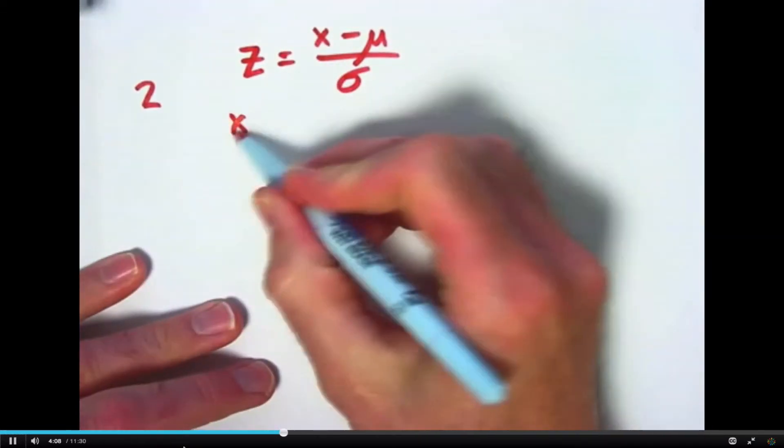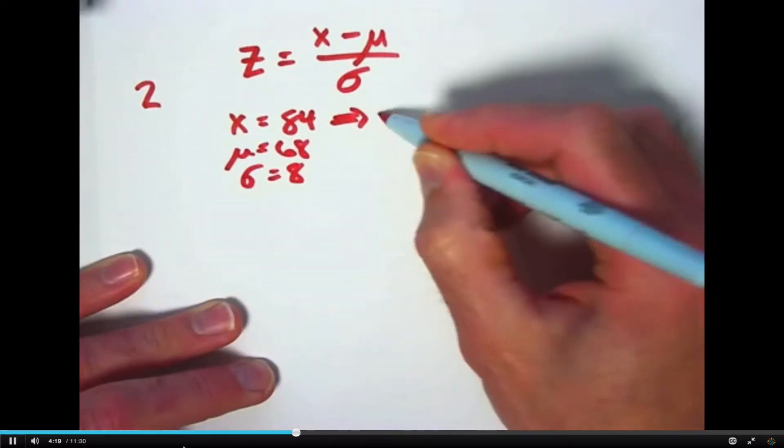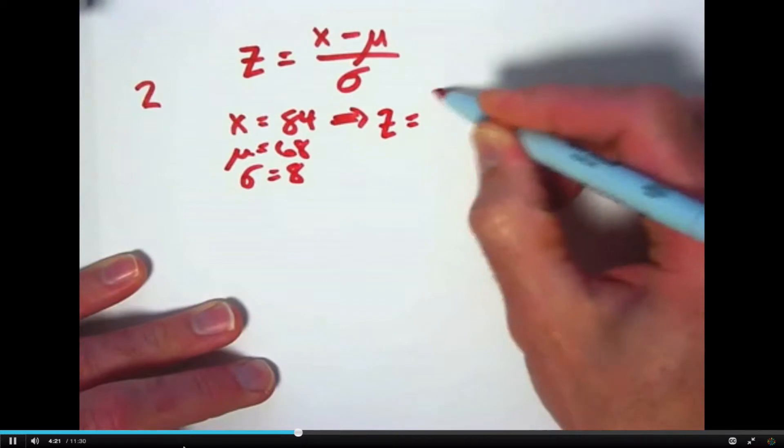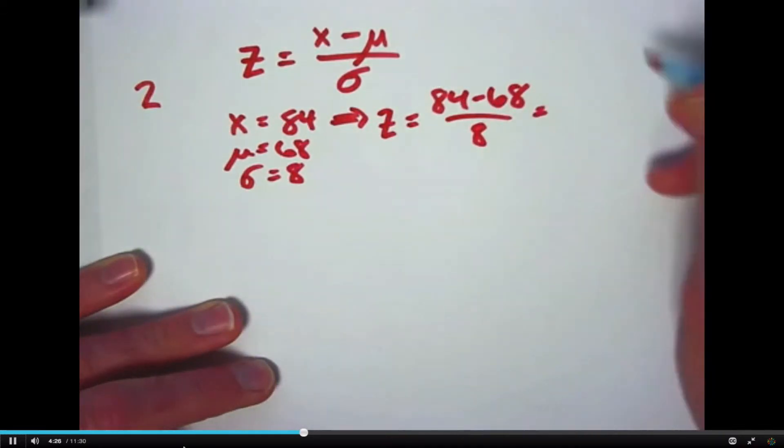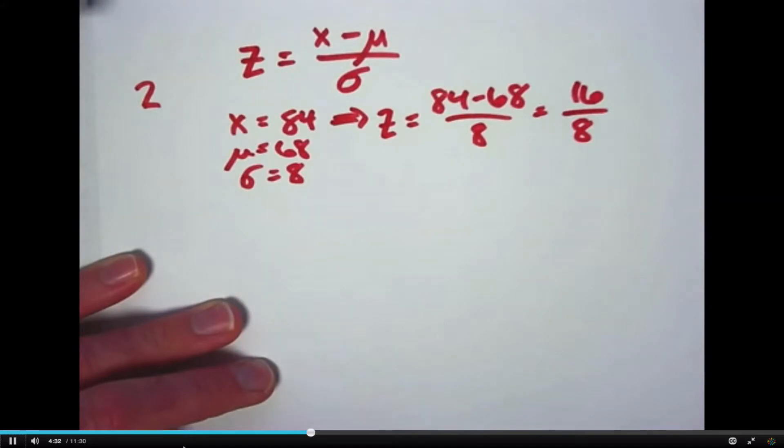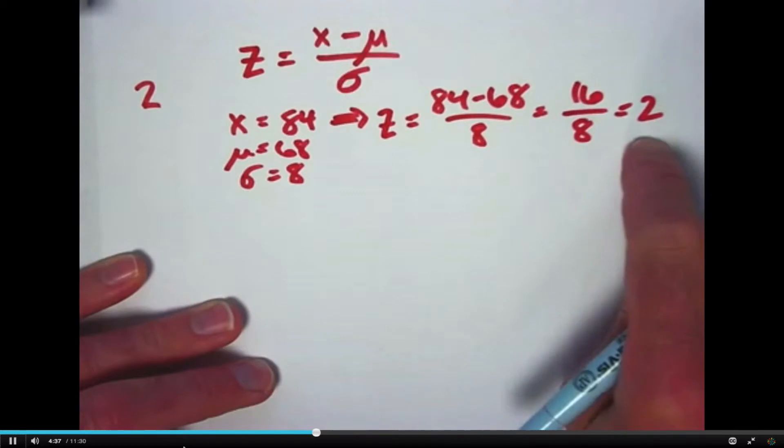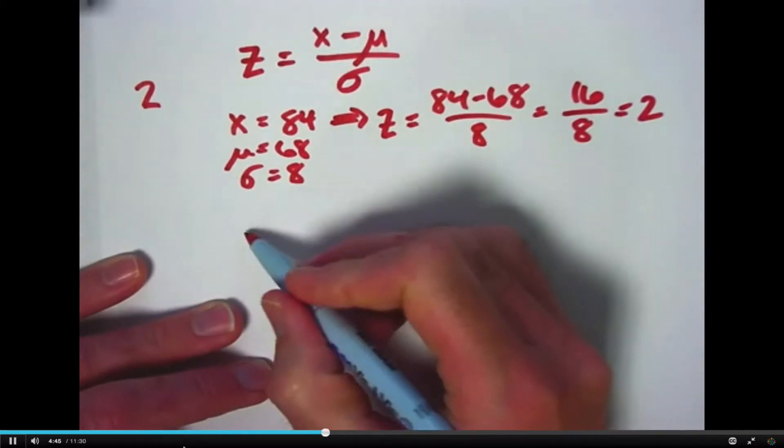If x is 84, μ again is 68, and σ is 8. This calculation gives you z is 84 minus 68 divided by 8. 84 is 16 bigger than 68, and since 8 is a standard deviation, that's two standard deviations. Z is 2. It's positive, so that's telling you that x was above μ, because 84 minus 68 is positive.